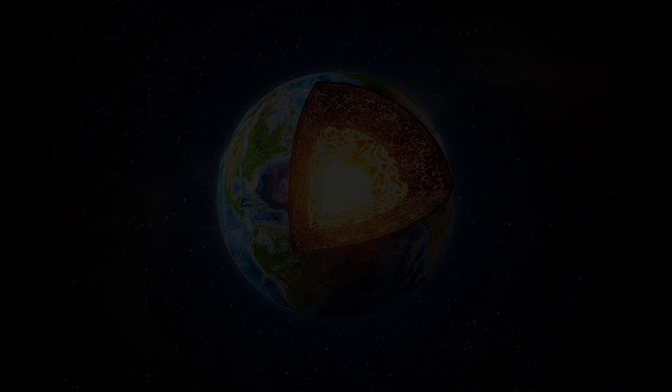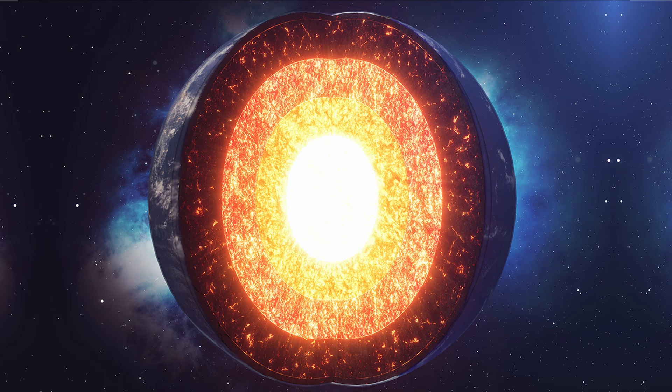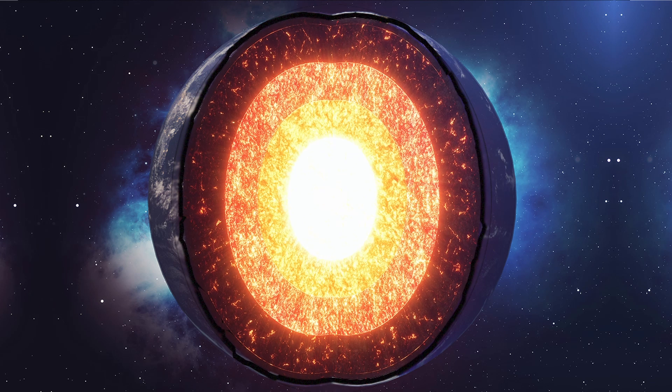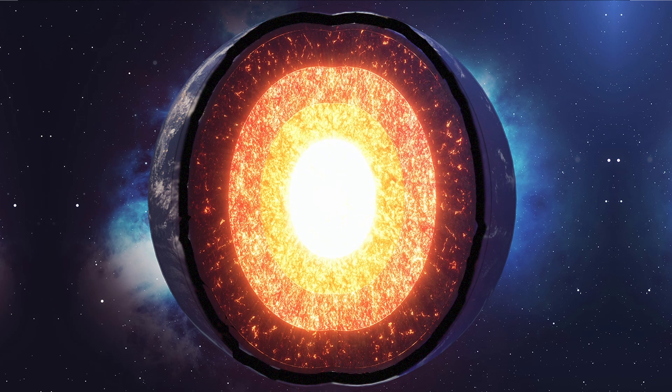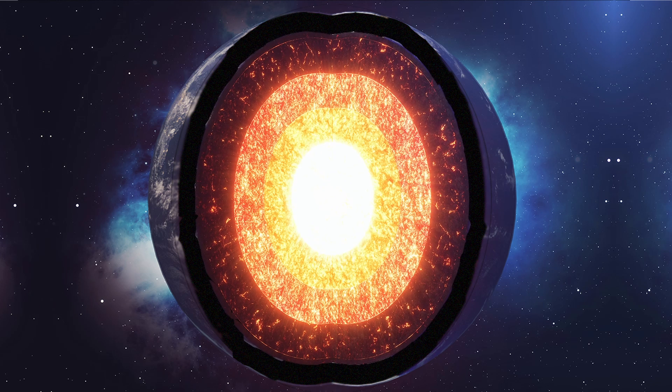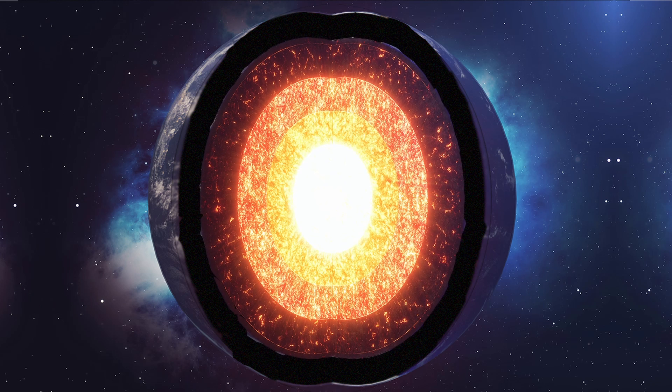The outside of the planet hardened, while the inside kept cooling, shrinking as it went. A gap began to open up between the interior of the Earth and this hardened crust. Eventually, this gap became too big, and parts of the crust began to collapse inward.